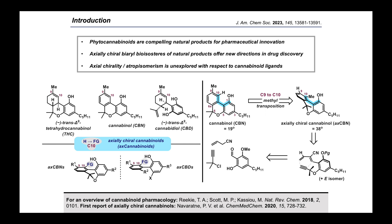While this initial synthetic strategy enabled gram-scale access to AXCBN, two critical limitations related to a key aldol condensation step — specifically its incompatibility with substituted propargylic nitriles and a lack of selectivity with respect to the geometry of the resultant alkene — prompted us to develop a second-generation route. The second-generation route needed to reinstall the methyl group at C9, as substitution at this position is known to be important for activity at the cannabinoid receptors. Thus, they hypothesized that AXCBNs with both C9 and C10 substitution will be better ligands.